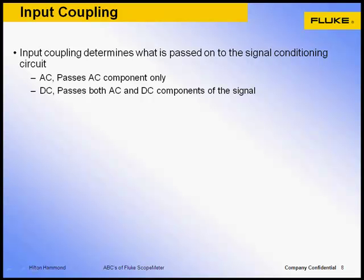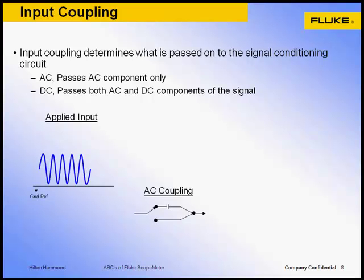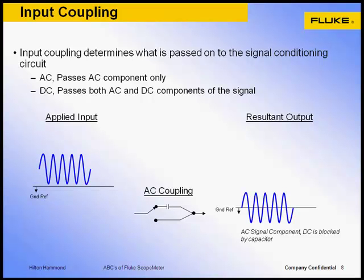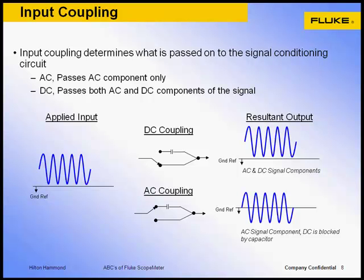AC coupling will display only the AC portion of a signal centered around the zero voltage point. With AC coupling on, DC offset present in the signal will not be displayed. If you're not sure, toggle the coupling on, then off to see if the signal contains any DC offset that is important to you.